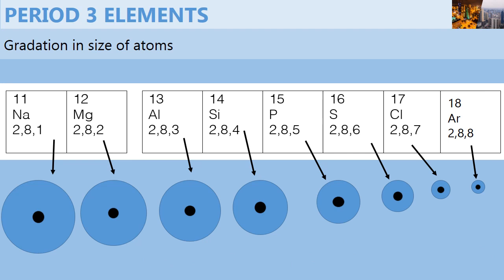So sodium, for example, has only 11 protons, while magnesium has 12 protons. Aluminum has 13 protons.